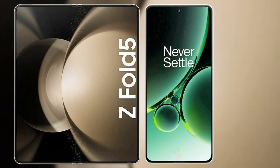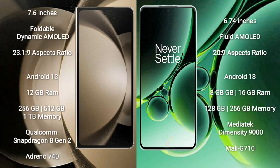I will compare the new Samsung Galaxy Z Fold 5 with OnePlus Nord 3. Samsung Galaxy Z Fold 5 comes with a 7.6-inch foldable dynamic AMOLED display and aspect ratio 23.1:9. OnePlus Nord 3 comes with a 6.74-inch fluid AMOLED display and aspect ratio 23:9.